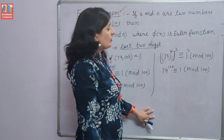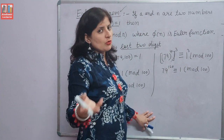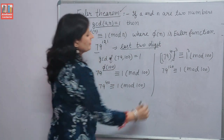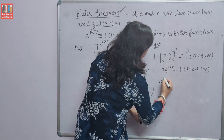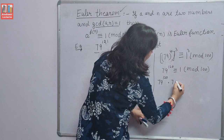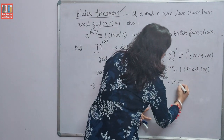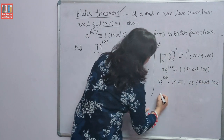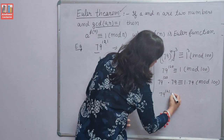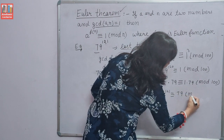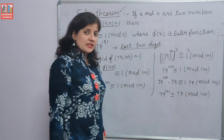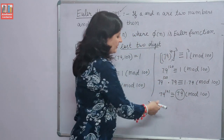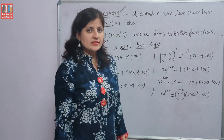Raising 1 to any power makes no difference — it remains 1. We need power 121, so we multiply 79 raised to the power 120 by 79: 79 raised to the power 121 is congruent to 1 × 79 = 79 modulo 100. The last two digits are 79, and when divided by 100 the remainder is 79.